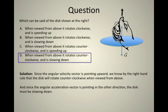The correct answer then is D. This is a disk that is rotating counterclockwise and is slowing down.